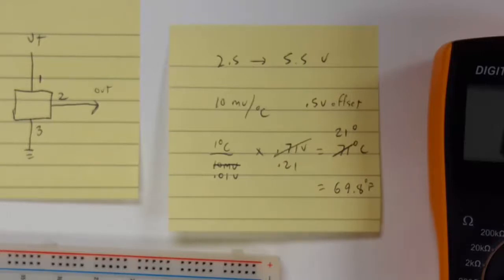The reason is because there's a 0.5 volt offset. So you have to subtract whatever voltage you get on your meter, you have to subtract 0.5 volts from that to get the true temperature.